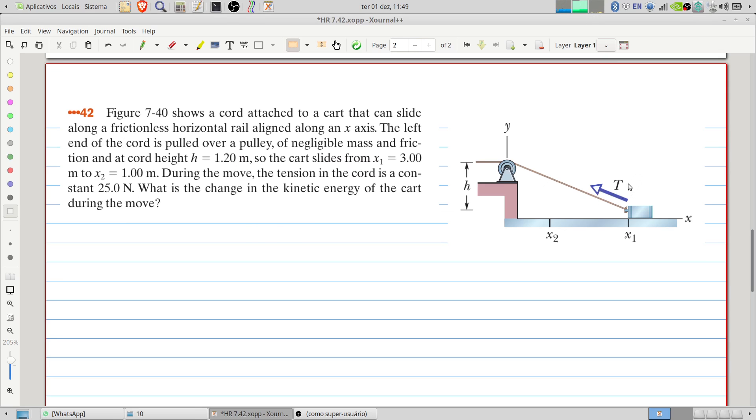Figure 740 shows a cord attached to a cart that can slide along a frictionless horizontal rail aligned along the x-axis. The left end of the cord is pulled over a pulley of negligible mass and friction at a cord height h equals 1.20 meters.